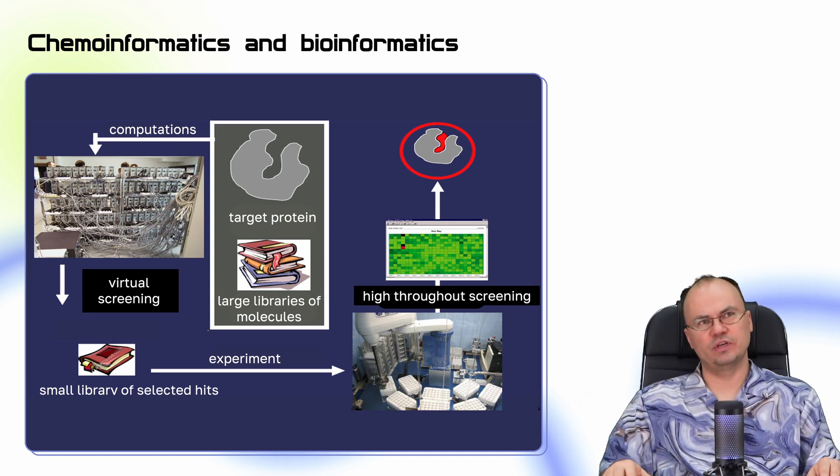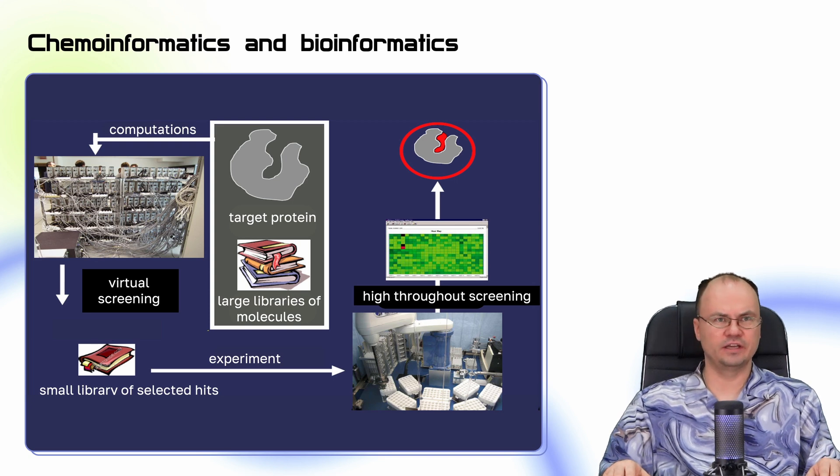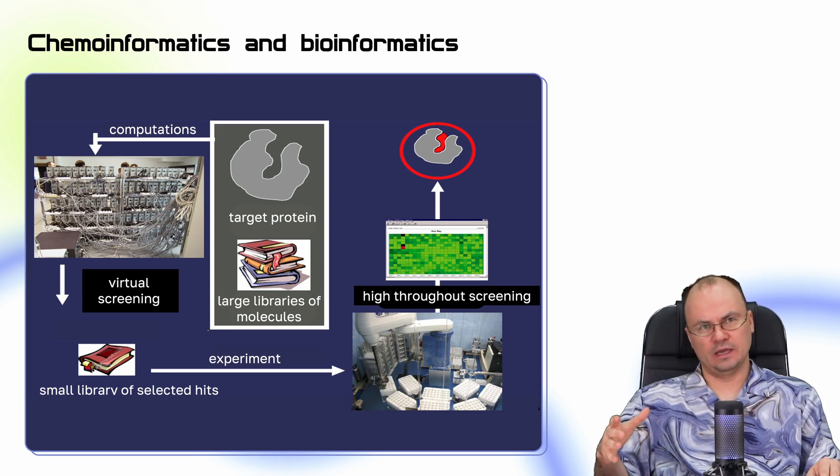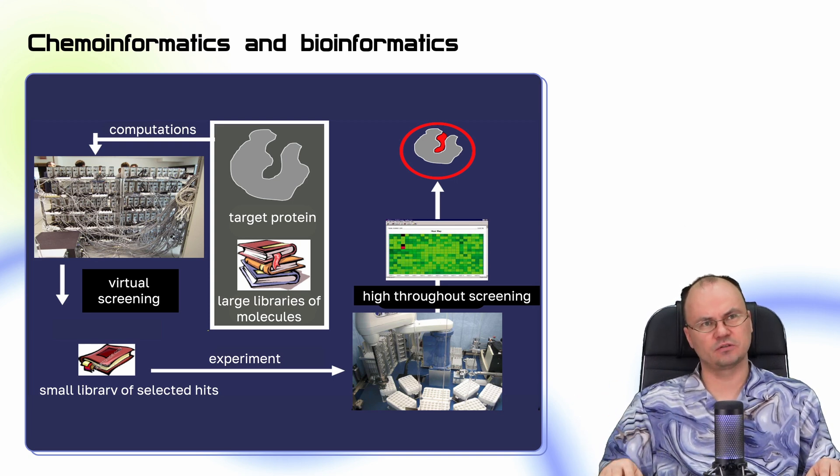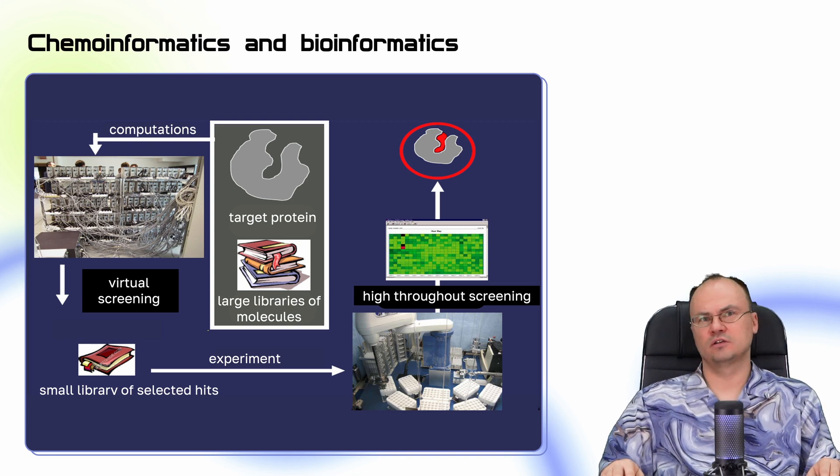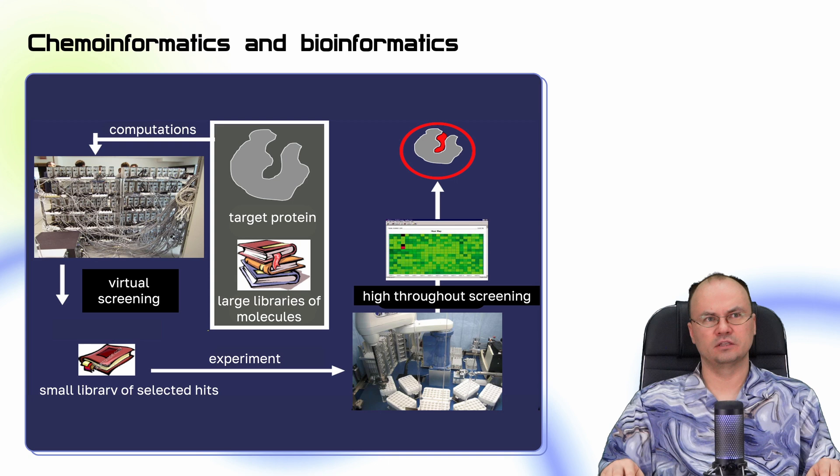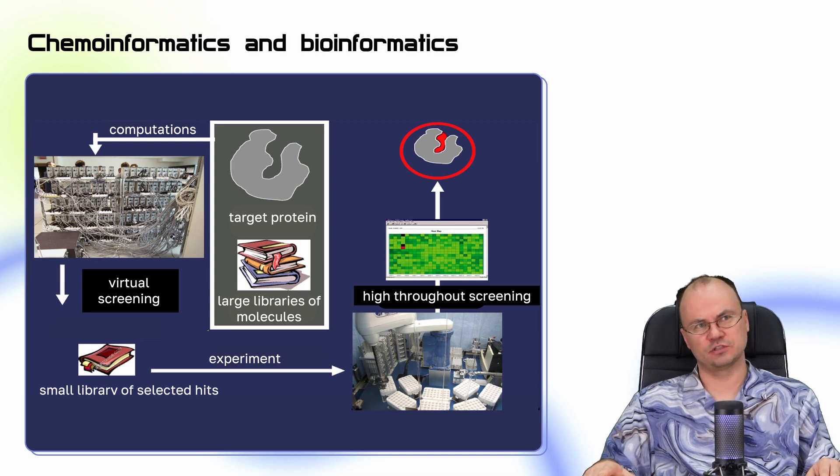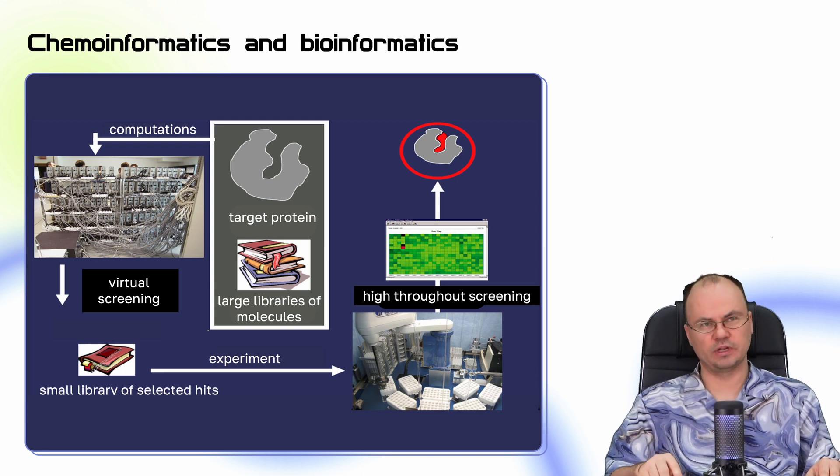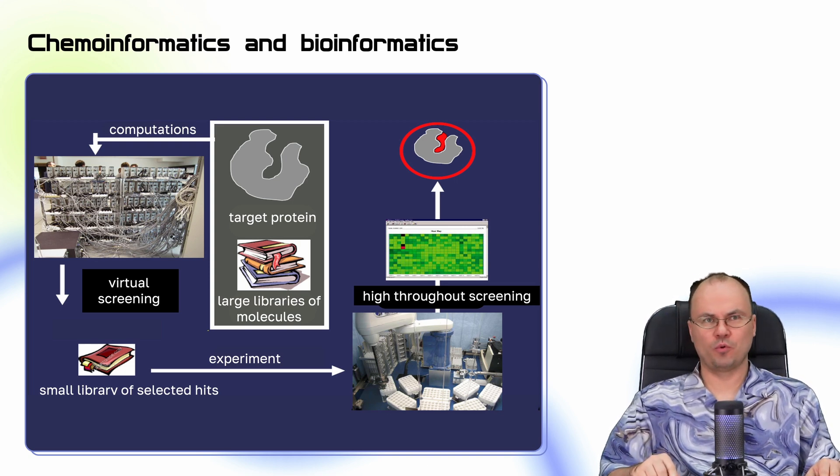And once we have some small library of selective hits, we would like to validate them using different in vivo or in vitro experiments, which are also very laborious and time consuming, not to mention they're also very expensive. And when we finish with these preclinical experiments, and if we are successful, then we will go to the next stage, that would be the clinical trials. And then after that, if the substance is proven to be worthy, then probably we are reaching the market with our new, more potent medications.